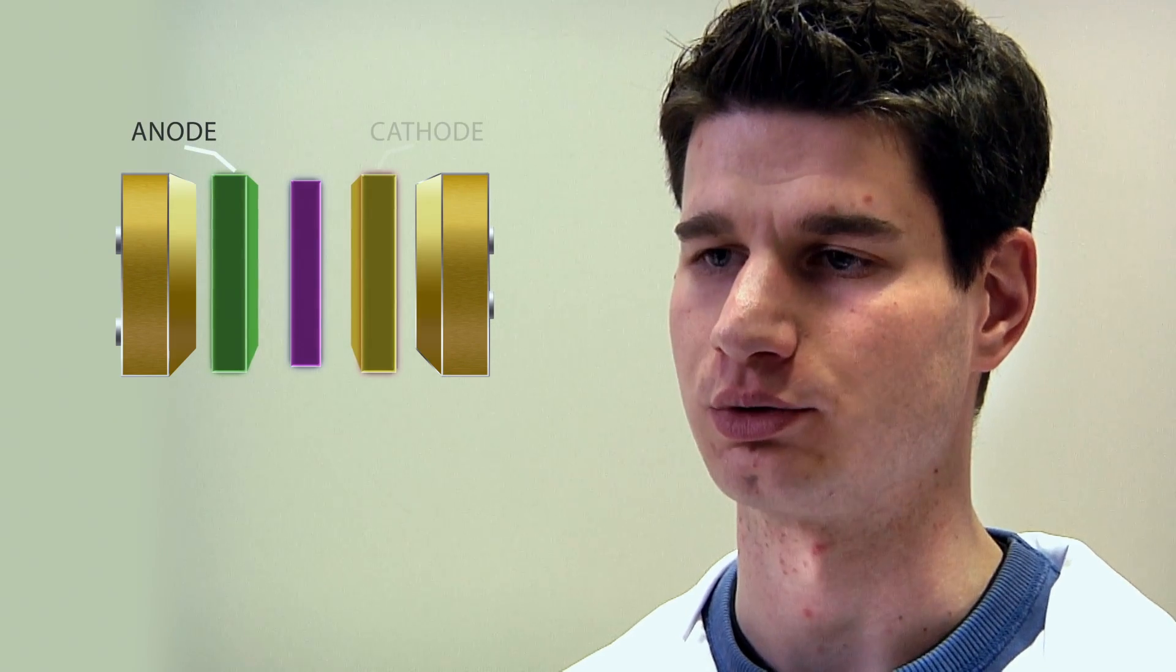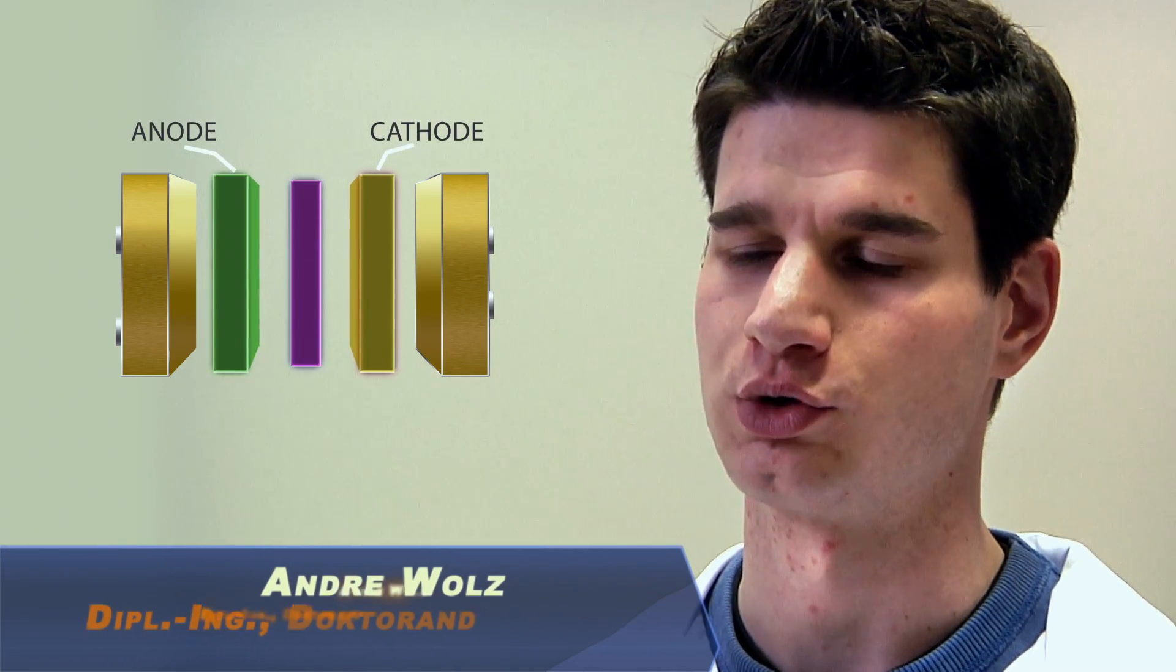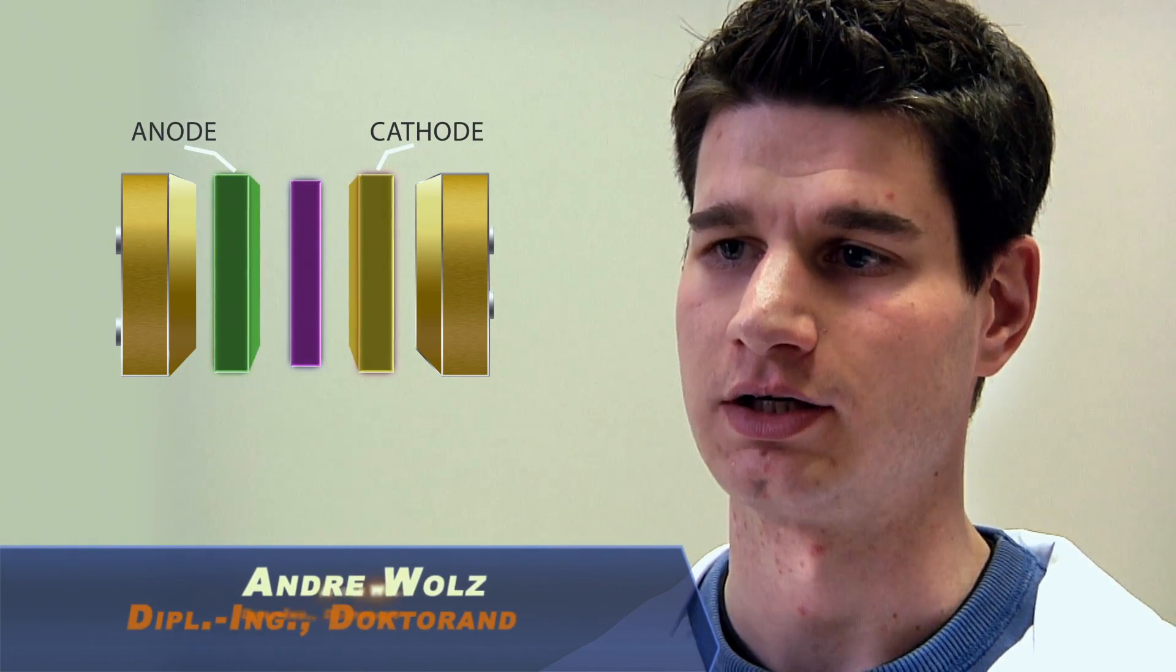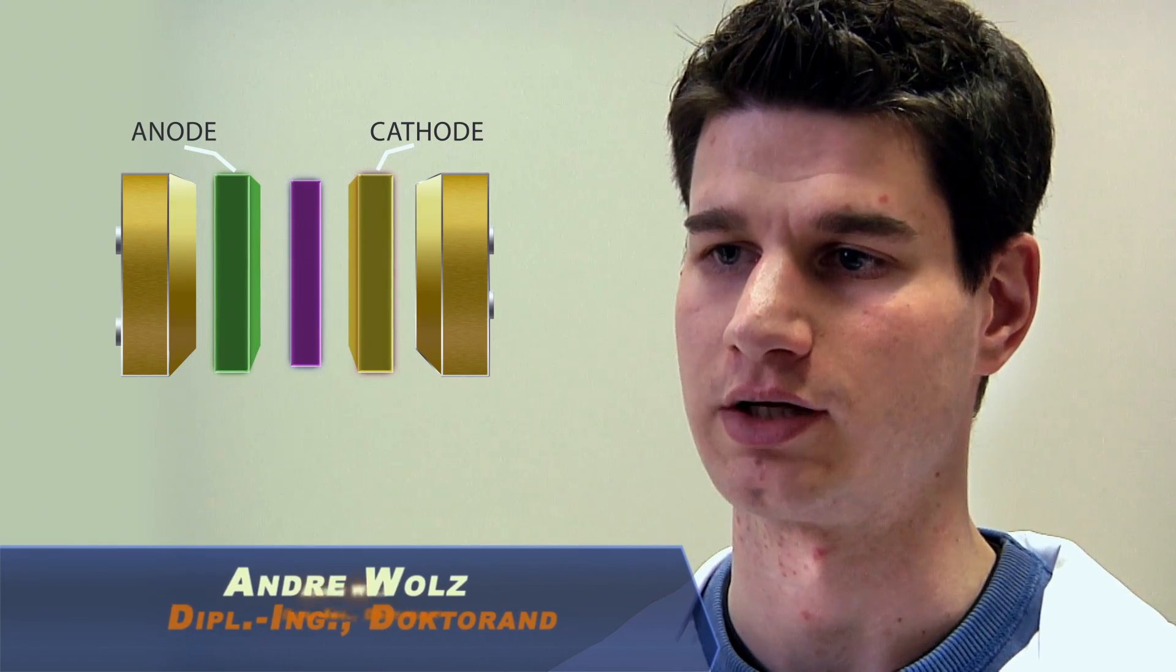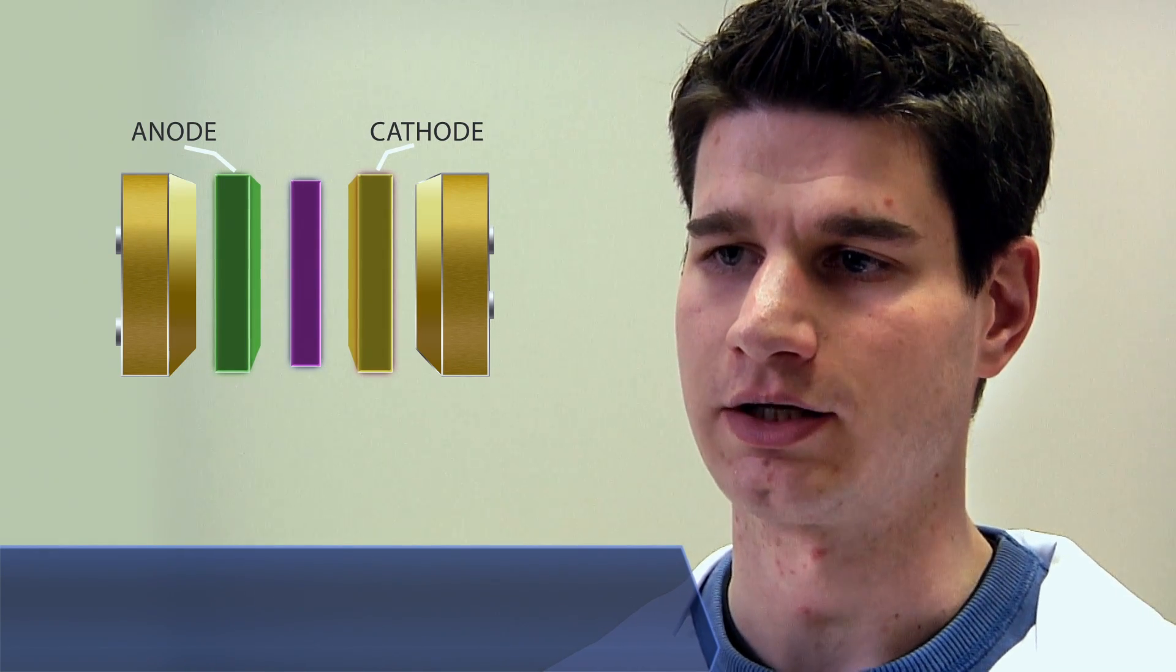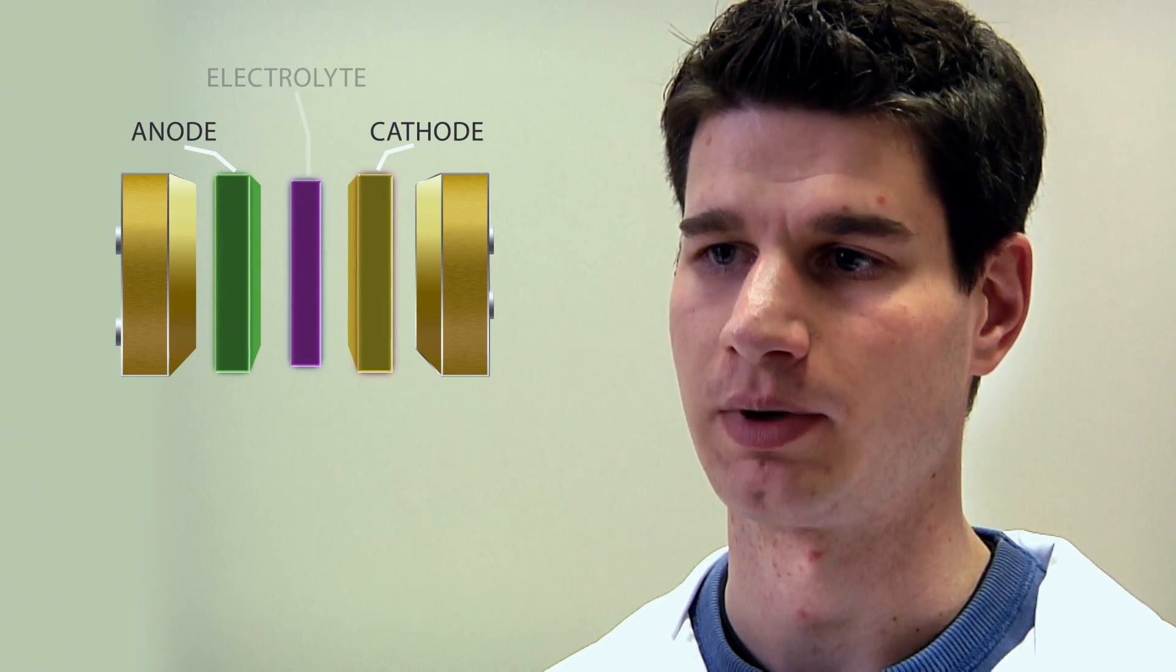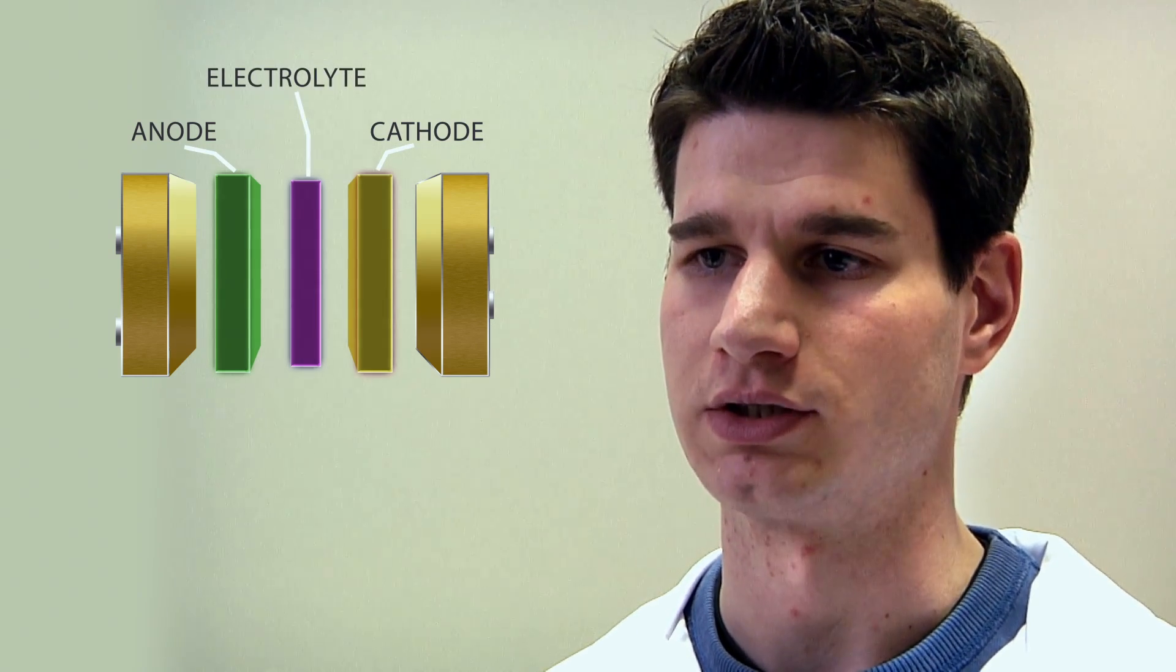Eine Brennstoffzelle besteht aus zwei Elektroden, der Anode und der Kathode. Diese sind normalerweise aus Kohlenstoffmaterialien gefertigt, die mit Platin-Nanopartikeln dekoriert sind. Diese beiden Elektroden werden durch eine Elektrolytmembran, welche aus Nafion besteht, getrennt.